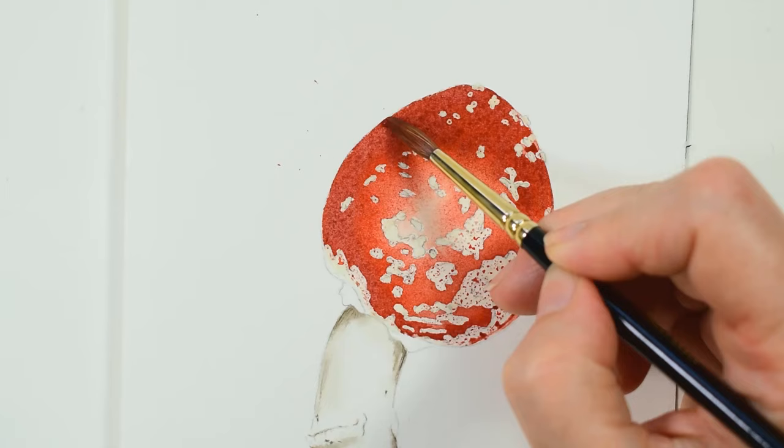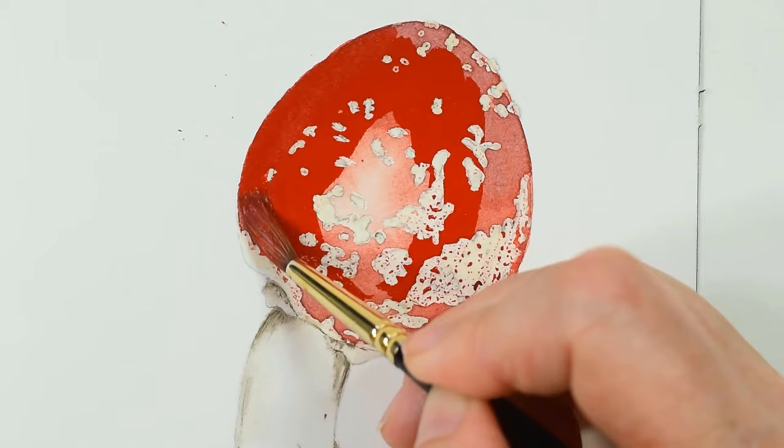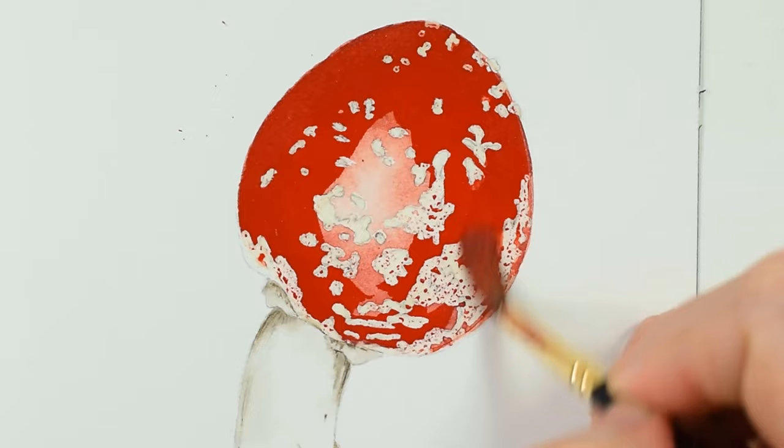I let this layer dry completely and then with a much deeper mix of my red, I paint it in to really enhance the color, still working around the highlighted area in the center.